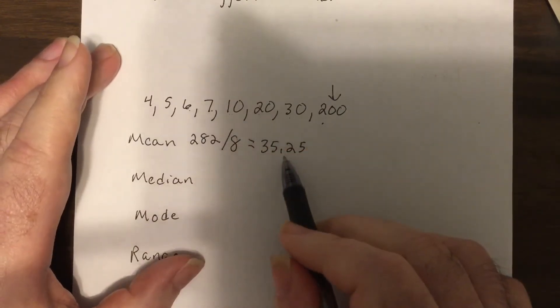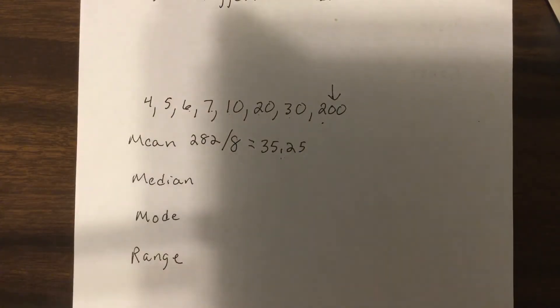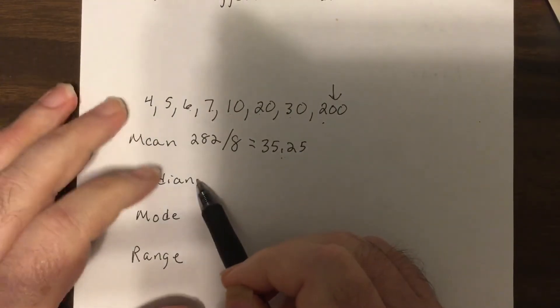Now notice only one number is bigger than that. Most numbers are a lot smaller than that, so it really brought the data, that 200, in one direction.